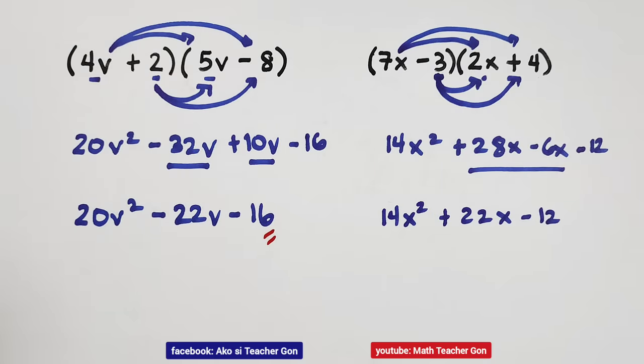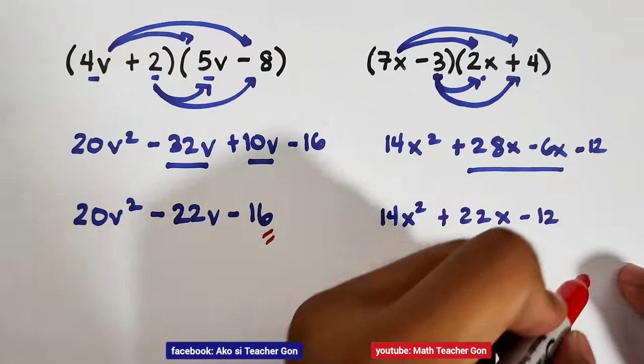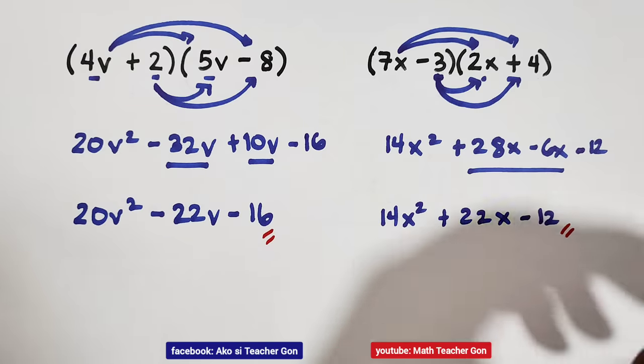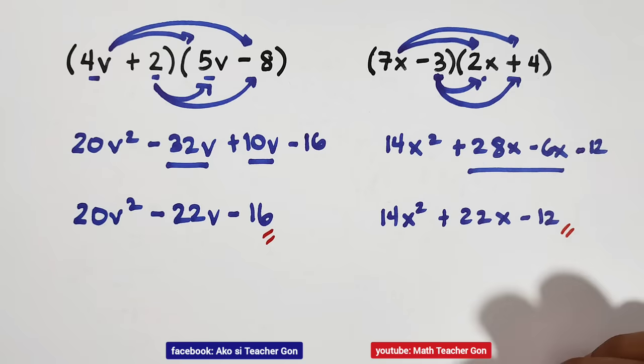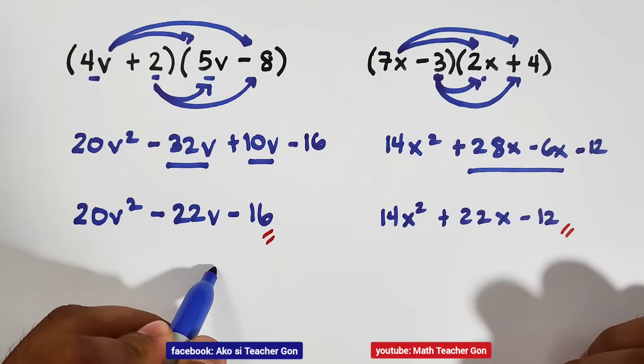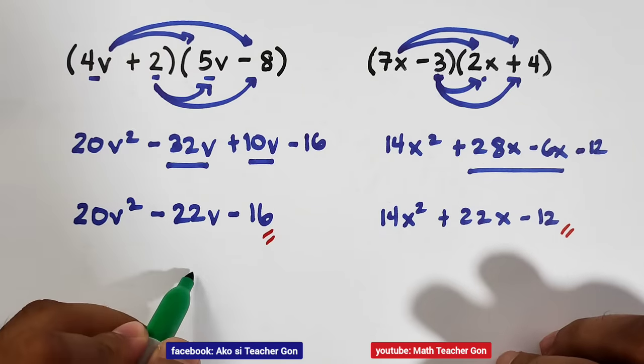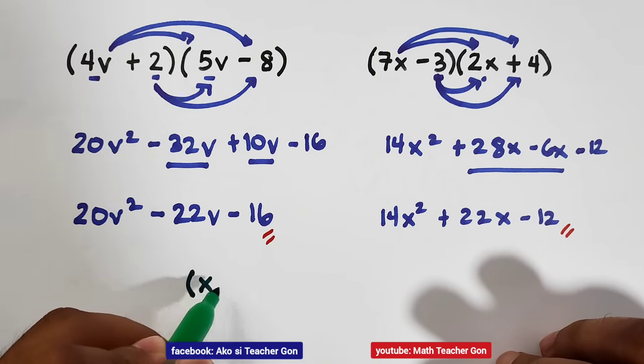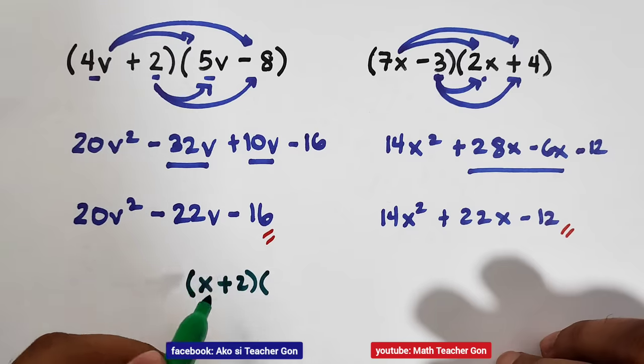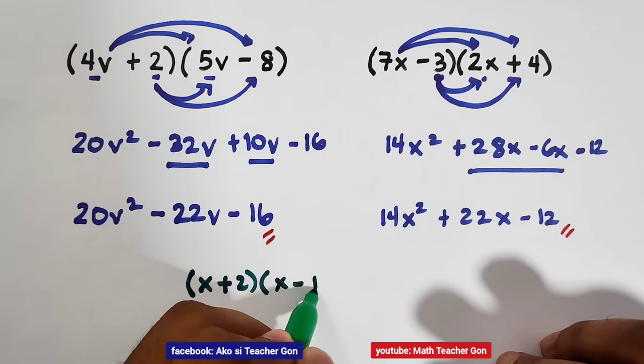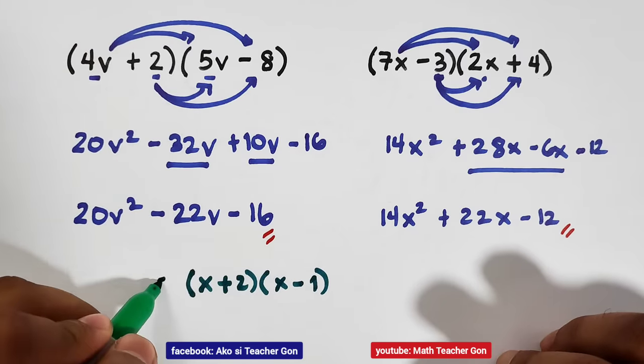And as you can see, it is easy for us to multiply or to get the product of the two binomials using the FOIL method. So for your activity, I will give you item number 5. So I hope you will try to solve this one, guys. And this is the problem. Try to multiply x plus 2 times x minus 1. And this is number 5.